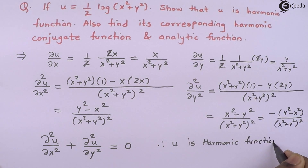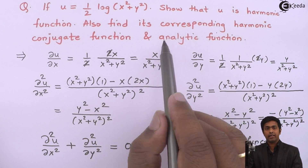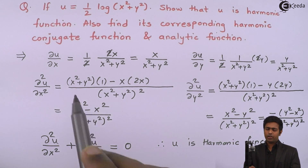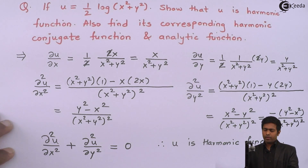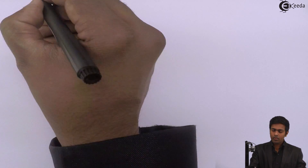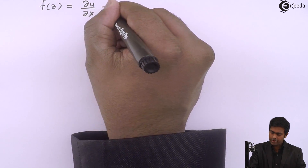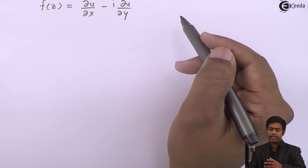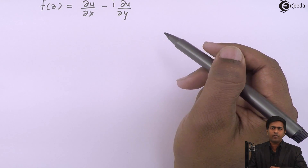Now we are done with the first part. Next, we have to find the harmonic conjugate and the analytic function. We will first find the analytic function. We have ∂u/∂x and ∂u/∂y, and we will use the property that f′(z) = ∂u/∂x − i·∂u/∂y. By integrating f′(z), we get f(z).